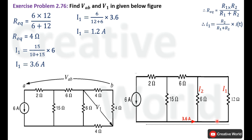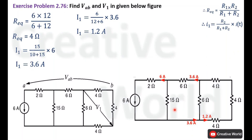We have found the current through that branch. The 12 Ohm resistance was the combination of three 4 Ohm resistances in series, so we replace the 12 Ohm with three series-connected 4 Ohm resistances. The circuit now includes all resistance values and branch currents: 6 Ampere through the 2 Ohm resistance, 3.6 Ampere through the 6 Ohm branch, and 1.2 Ampere through the series 4 Ohm branch.